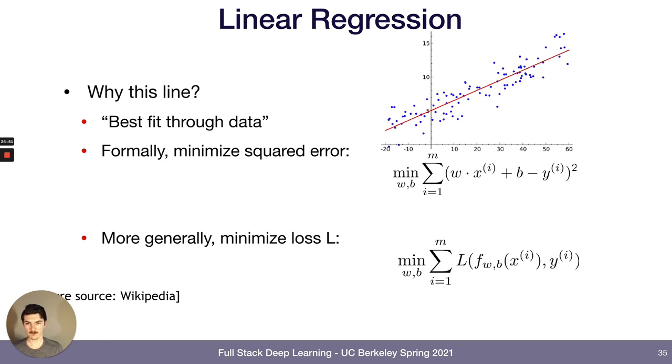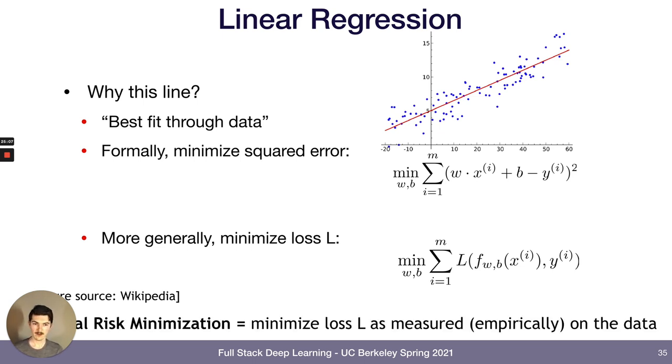And more generally, we can call this squared error function a loss function. And our goal is to minimize the loss function. Okay, so we find the setting of weights and biases, like a and b, that minimize the loss function. And this is the whole idea of empirical risk minimization.